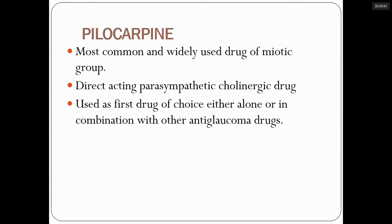Pilocarpine is a direct-acting parasympathetic cholinergic drug. This is very important for exams — the pilocarpine vial has black lettering and reads 'pilocarpine 2% ophthalmic solution.' You may be asked which group of drug it belongs to — it is a parasympathetic cholinergic drug and is a first drug of choice either alone or in combination with other anti-glaucoma drugs.